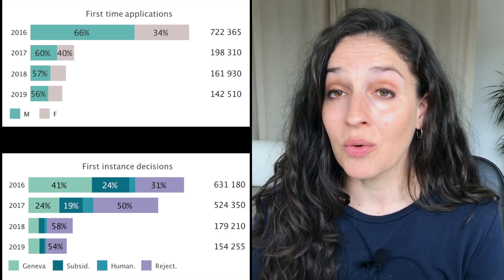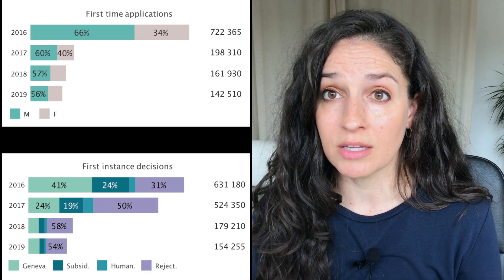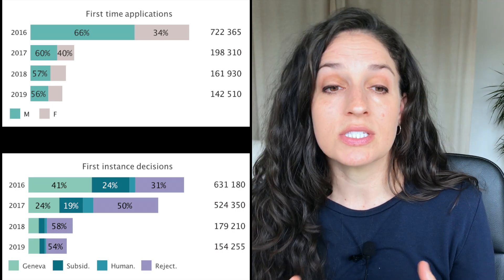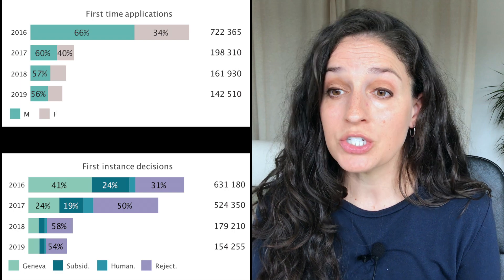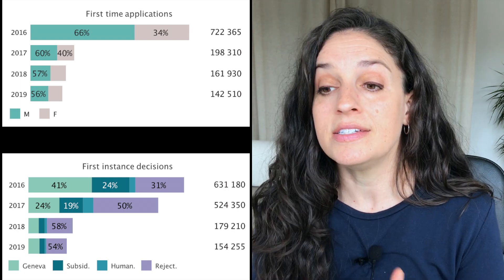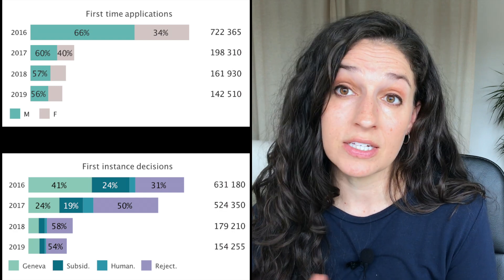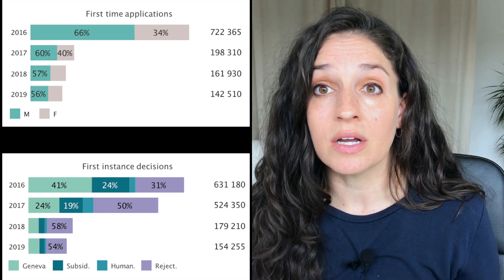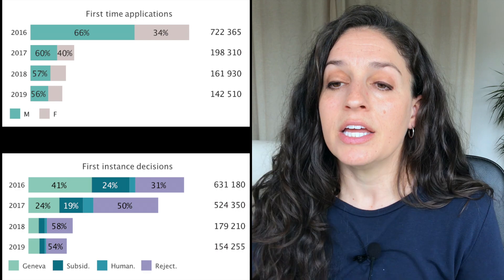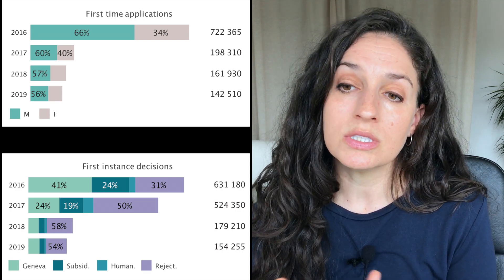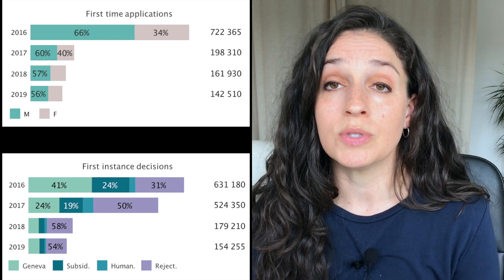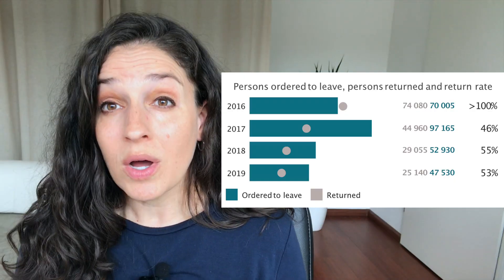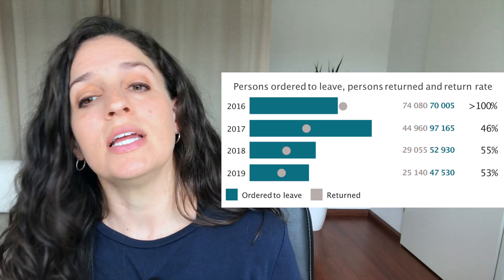Now let's look at asylum applications. Many of you might know that Germany had a large number of asylum applications in this period, especially in 2016. You can see the difference between first-time applications broken down by gender, and it's clear that more men than women are applying for asylum — that's quite common especially in a European context. If we look at the decisions, there's a pretty high rate of rejection: from 2017 onward, 50 percent or more of first-time applications were rejected.